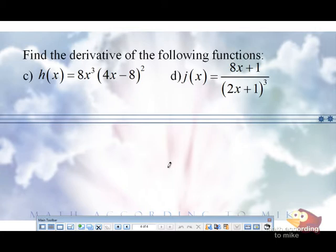Secondly, now notice that in Part C, we have a product rule. And then within that product rule, we have a function inside of a function. So you've got a chain rule in my product rule. Not as good as peanut butter and chocolate, but we'll make do.